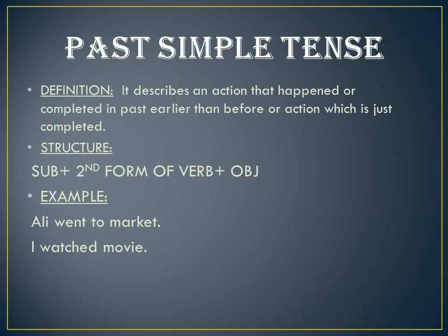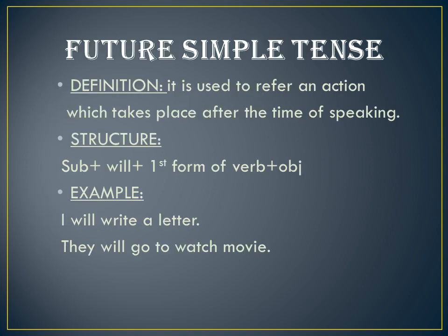Moving towards the next tense — past simple tense — which describes an action that happened or was completed in the past. The structure is: subject + second form of verb + object. Examples: 'Ali went to the market,' 'I watched movies.' While making negative and interrogative sentences of past simple tense, we use 'did,' and when 'did' is used there is no need to add the second form of the verb.